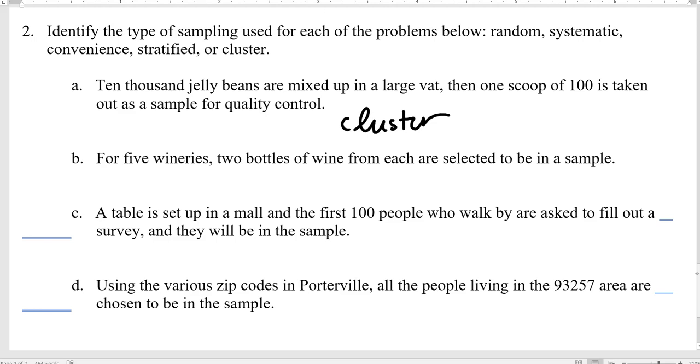For five wineries, two bottles of wine from each are selected to be in a sample. What are we thinking? Systematic. So we chose every two bottles, every second bottle. That's where we choose every nth. It's not quite what it's saying. So we're doing a random sampling from each winery. We've separated them into five separate wineries. And they might have some difference of importance. They produce it differently. And then we do a random sampling from each group. What is that? That is stratified.